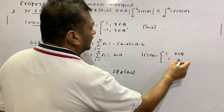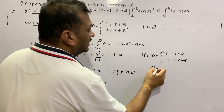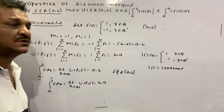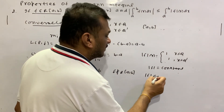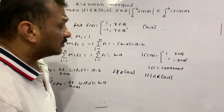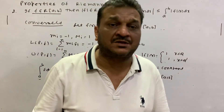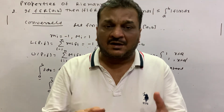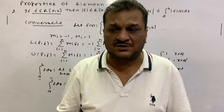However, |F(x)| = 1 everywhere, so |F| is Riemann integrable. This shows that |F| may be Riemann integrable but F may not be. Thank you very much. See you in the next video.